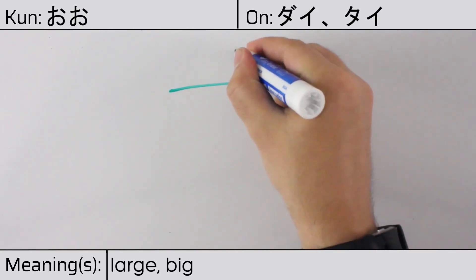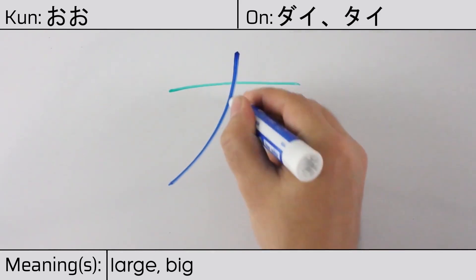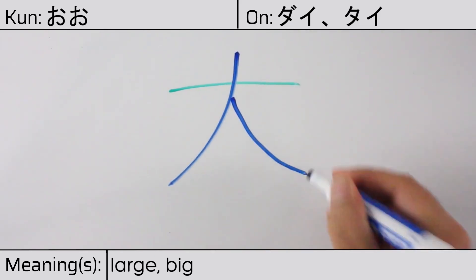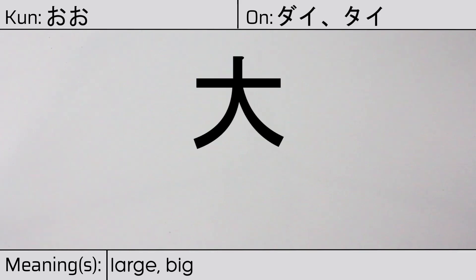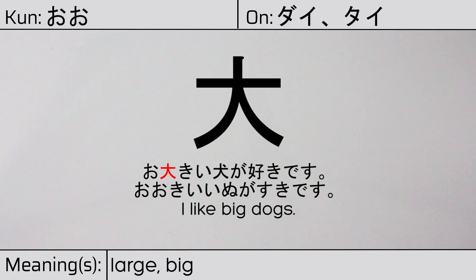This character is made up of the following radicals or parts: kanji ichi or one, and the kanji for person hito. Our example sentence is: ooki inu ga suki desu — I like big dogs.